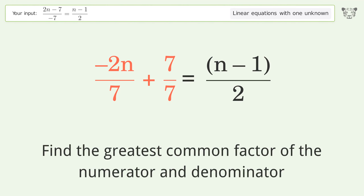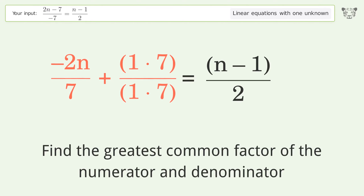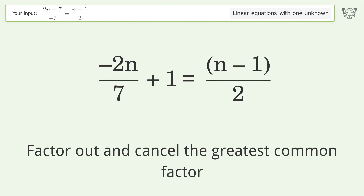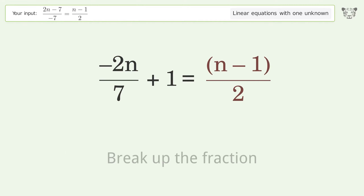Find the greatest common factor of the numerator and denominator. Factor out and cancel the greatest common factor. Break up the fraction.